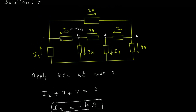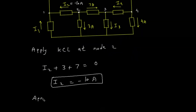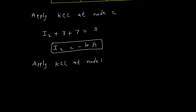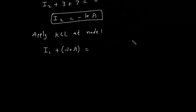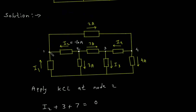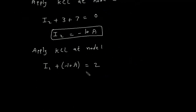Now we can find I1 from these two values: 2 ampere and minus 10 ampere. Apply KCL at node 1. Summation of all the incoming current at the node: incoming current is I1 and minus 10 ampere. I1 plus minus 10 ampere is equal to the summation of all the current leaving the node, which is 2 ampere. So I1 is equal to 2 plus 10, which is equal to 12 ampere.